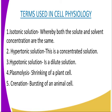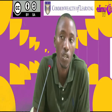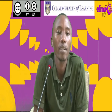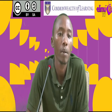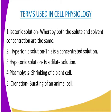There are several biological terms which are used in this topic of cell physiology. As you can see from our screen, we have isotonic solution, hypertonic solution, hypotonic solution, plasmolysis, and we also have crenation. I am going to explain these terms. In simpler terms, isotonic solution is whereby the solute and solvent concentrations are the same.